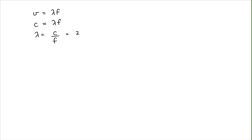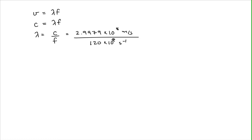So the wavelength is 2.9979 times 10 to the eighth meters per second divided by 120 gigahertz. Plugging this into the calculator, I get that the wavelength is equal to 2.50 millimeters.